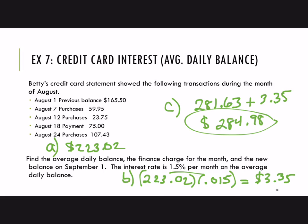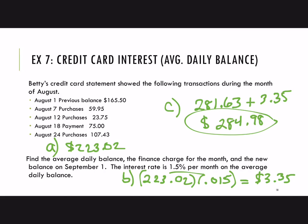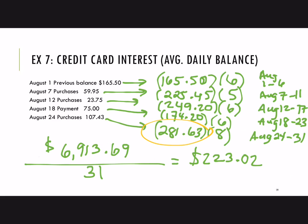Let's recap. Start by finding the average daily balance: do the additions and subtractions — add purchases, subtract payments — find the balance each day, multiply by the number of days that balance is carried, then divide by the number of days in the month. That gives the average daily balance. Multiply that by the percentage rate to find the finance charge. The new balance is always the last balance for the month plus the interest.